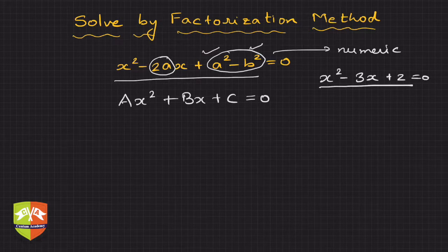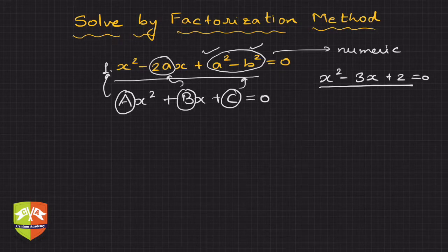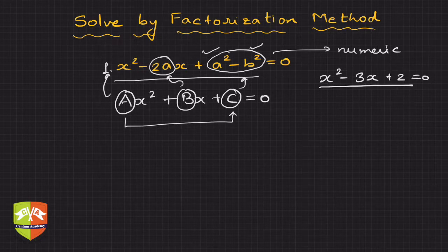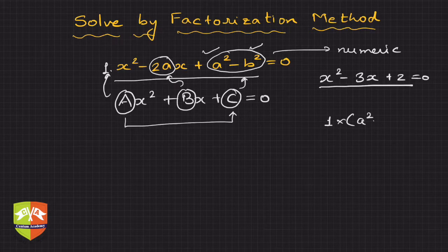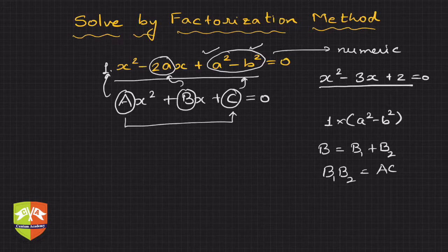A is the coefficient of x², which is 1. B is the coefficient of x, which is -2a. And C is nothing but a² - b². What was the methodology? We multiply A and C first. So A and C if you multiply you'll see 1 times (a² - b²). Then we have to split B in terms of B₁ + B₂ such that B₁B₂ equals AC.